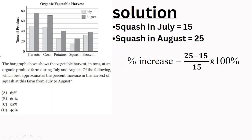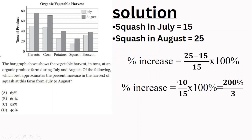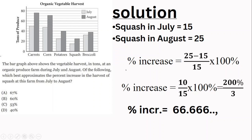New value is 25, minus old value 15, over 15, times 100%. So percentage increase equals 10 over 15, times 100%, which simplifies to approximately 67%.